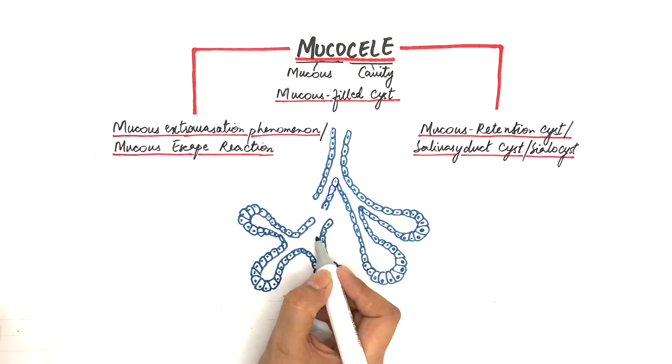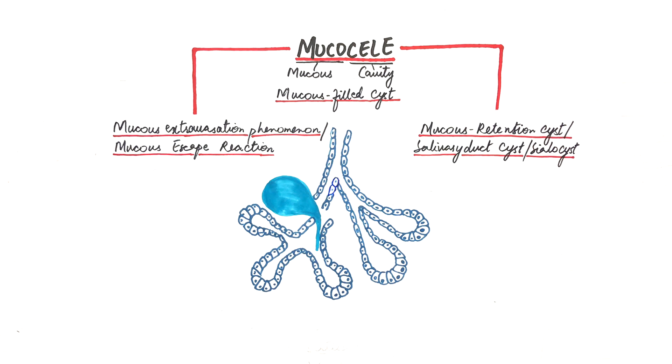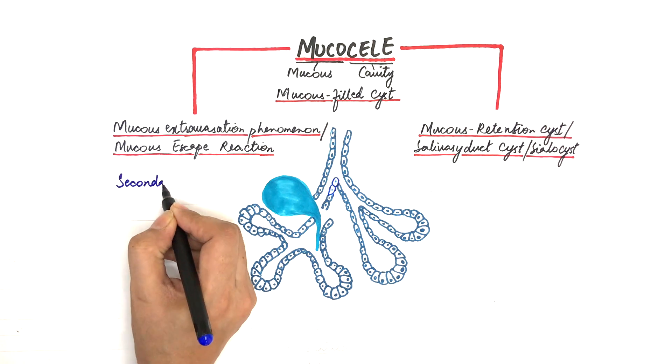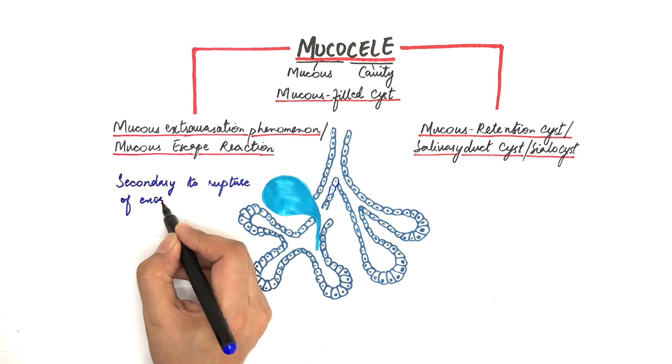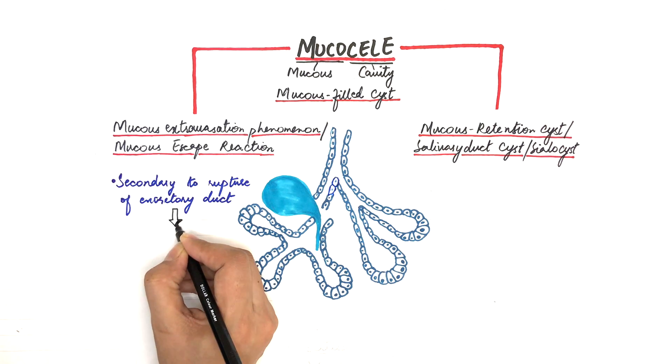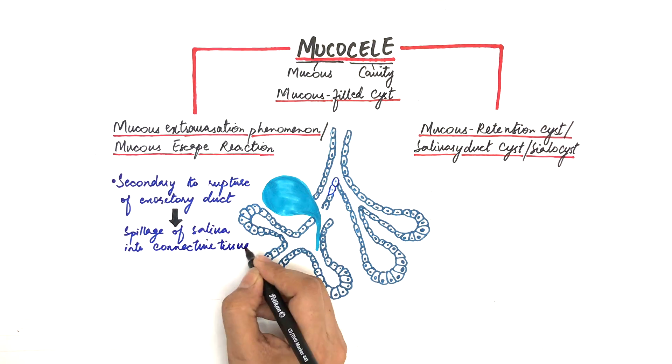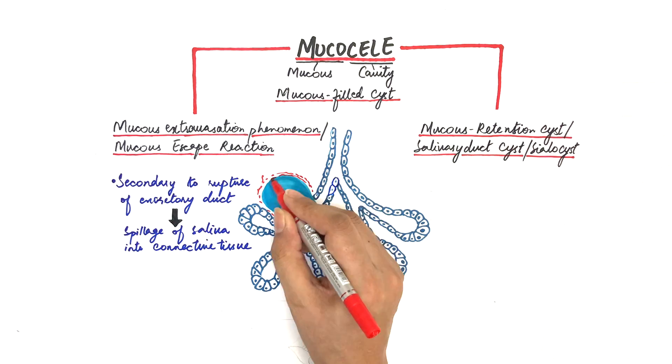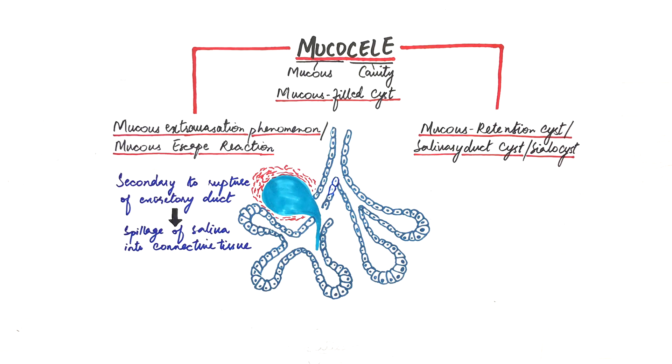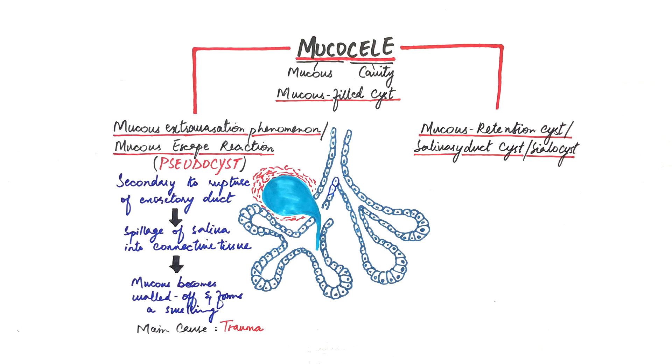The mucus extravasation phenomenon or mucus escape reaction are associated with minor salivary glands and are formed secondary to rupture of excretory duct of a gland. This rupture of the salivary duct leads to consequent spillage of saliva from the duct into the connective tissue around the gland. The mucus becomes walled off and causes a cyst-like swelling but is not lined by an epithelium. That's why they are called pseudocysts or false cysts. The spillage of mucus in extravasation phenomenon may result from local trauma through the salivary gland ducts, although in many cases there may be no known history of trauma.